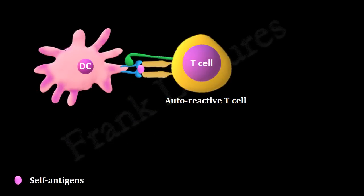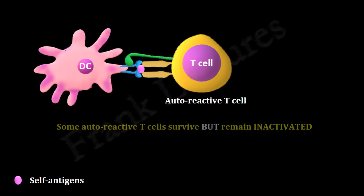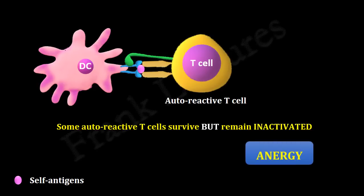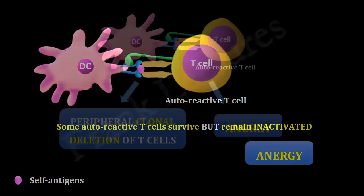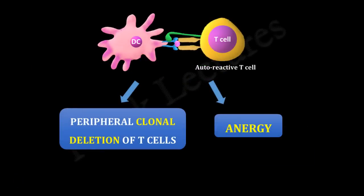Not all T cells that recognize self-peptide MHC molecules on immature dendritic cells undergo clonal deletion. Some survive but become inactivated, so they cannot differentiate into effector cells. This process, in which a lymphocyte remains inactive even upon contact with its specific antigen, is known as anergy. The reason for anergy in T cells is the absence of signals required for complete T cell activation. Clonal deletion and anergy are the two main mechanisms of peripheral tolerance that prevent the activation of autoreactive lymphocytes.